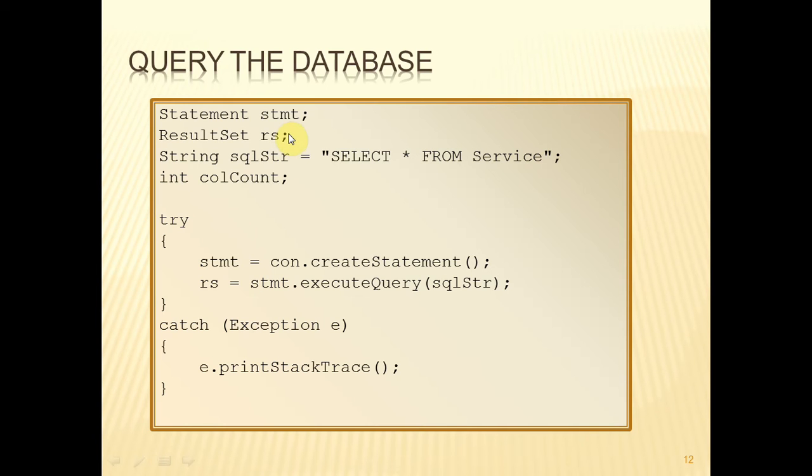Now, the way that this is going to work is that we're going to create a statement object. Using that statement object, we shall execute a query that will then return a result set. And so we've also got a variable that's going to hold that result set. We've also got this variable here called colCount. I'll tell you in a while why we're going to use that.